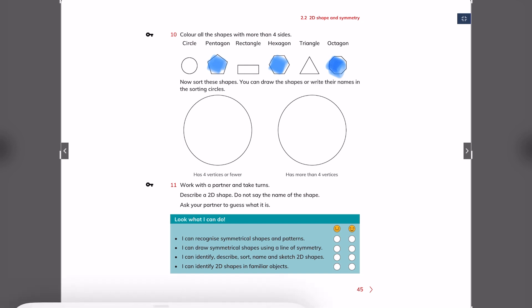Now, these shapes, you can draw the shape or write their name in the sorting circle. Has four vertices or fewer. Which one of these have four vertices or fewer? Circle, triangle, and rectangle.